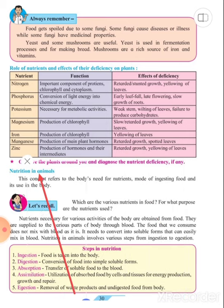Nutrition in Animals. This concept refers to the body's need for nutrients, mode of ingestion, food and its use in the body. Let's recall.